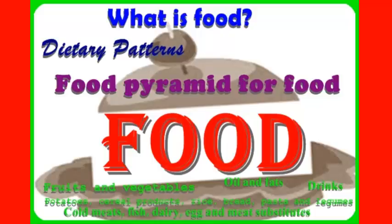The food pyramid is a tool that is used to inform people about good and healthy food. The food pyramid is aimed at the general public. The idea is that from each of the five groups of nutrients, a choice will be made each day, and those choices are processed into the meals of the day.